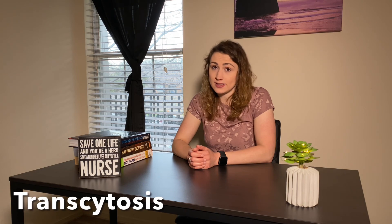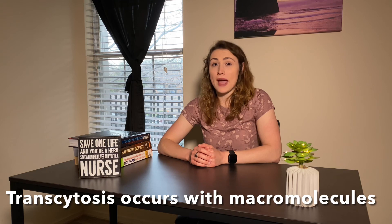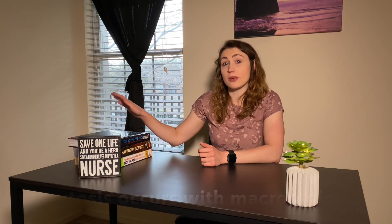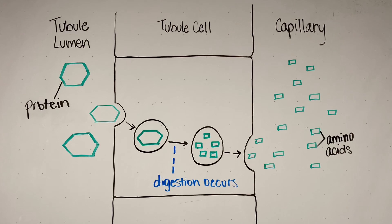The last mechanism of transport is transcytosis. Transcytosis occurs when macromolecules that are too big to go across the cell themselves are engulfed in little sacs on one side of the cell, transported in this sac across the cell, and then ejected from the cell on the other side. In the kidneys there's a modified transcytosis that occurs with plasma proteins. Some plasma proteins can get filtered at the Bowman's capsule, and even though they pass through the filtration barrier, they're still too big to be reabsorbed through channels. So these proteins are engulfed, then in the cell they are digested by lysosomes, and released on the other end as amino acids into the capillary.